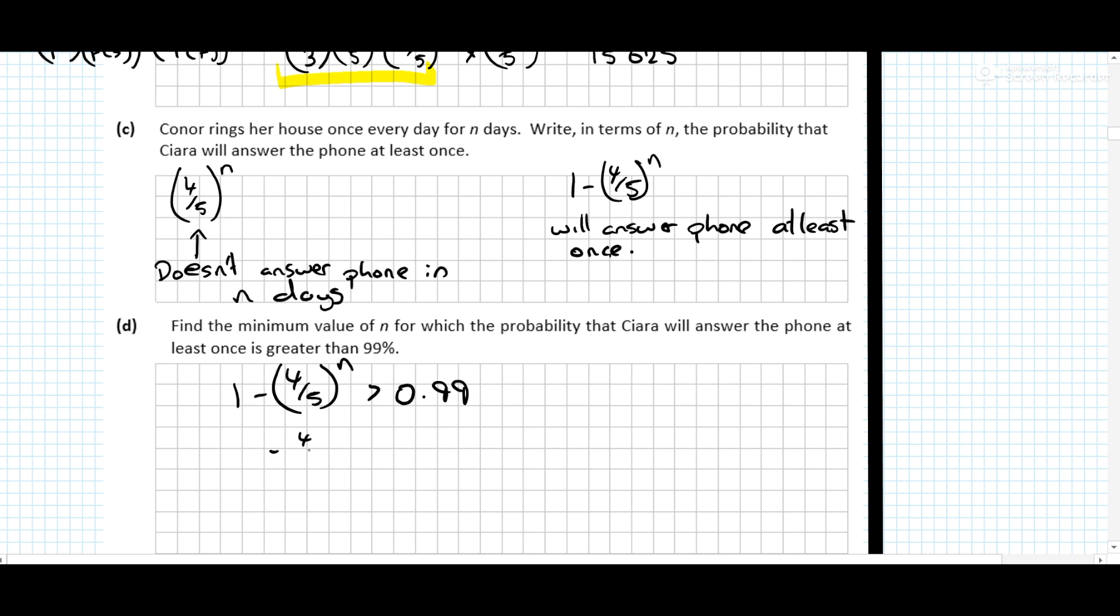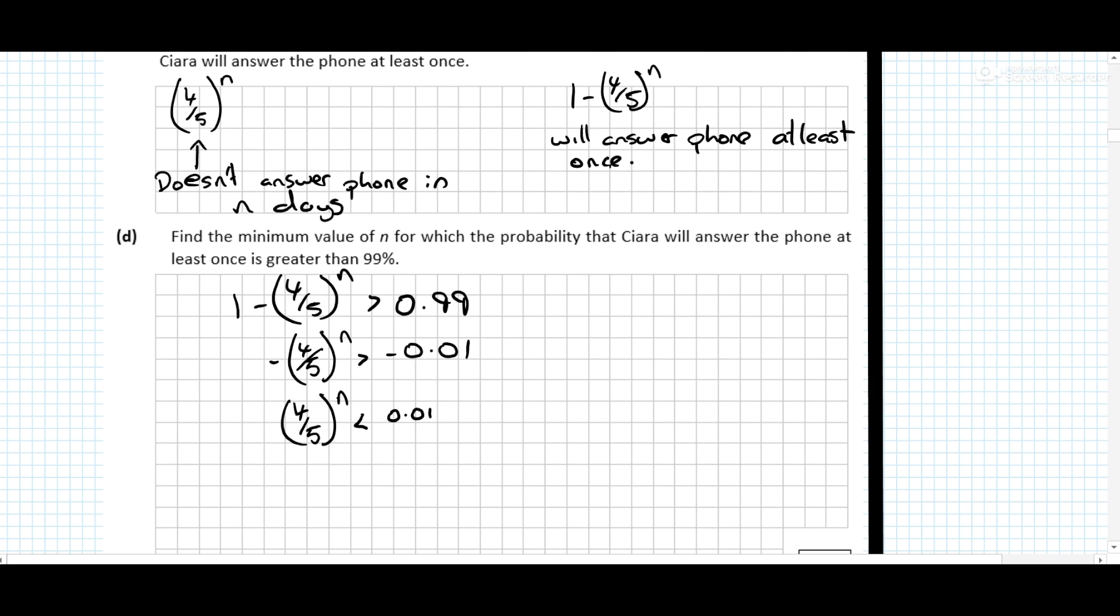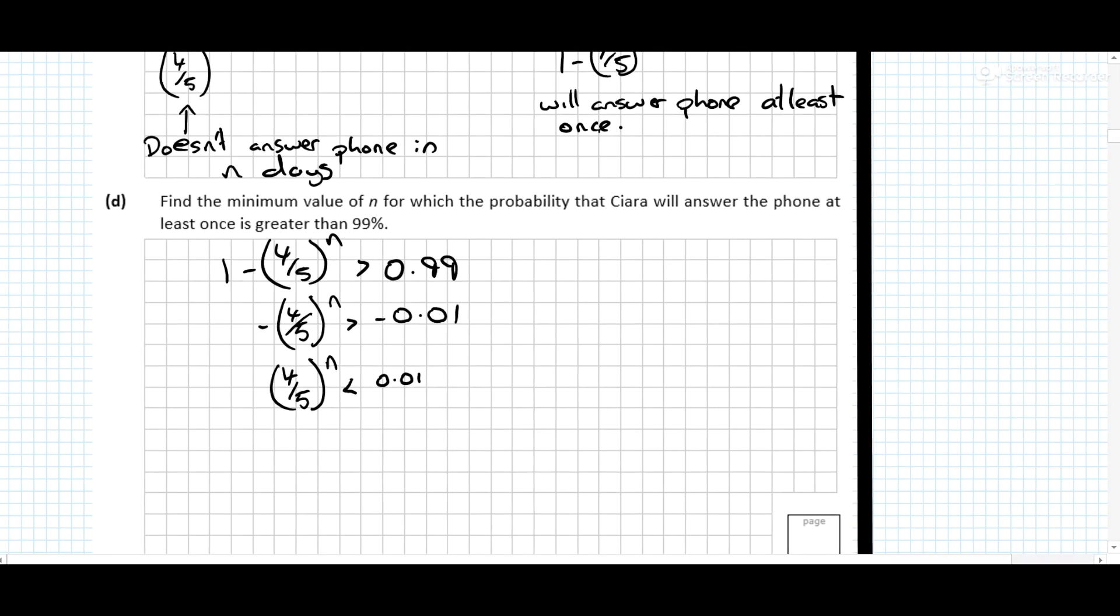Okay, so minus 4 over 5 to the power of n is greater than, subtract 1 from both sides, minus 0.01. Multiply both sides by minus, making sure to change the direction of the sign. Now, like in paper 1, we're dealing with an unknown exponent, so what are we going to do? Go to page 21 of your log tables, page 21.